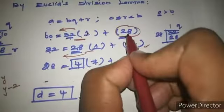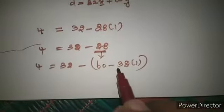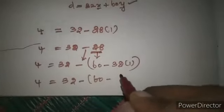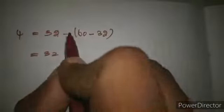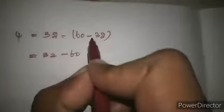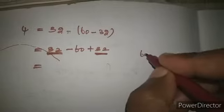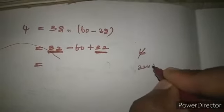28 value is 60 minus 32 times 1. When moving to left side, minus converts to plus and plus converts to minus. So 4 equals 32 minus 60 minus 32 times 1. That equals 32 times 1 minus 60 plus 32, since minus times minus is plus. So 32 plus 32 equals 64.